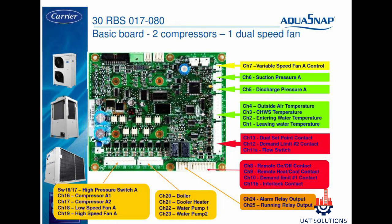Channel 11A is used for the flow switch. Remote on/off contact is connected on channel 8. Remote heat or cool contact is on channel 9. Demand limit number 1 is on channel 10. Interlock contact is connected on channel 11B. Boiler command is connected on channel 20. Cooler heater is connected on channel 21. Water pump 1 and 2 are connected on channels 22 and 23.